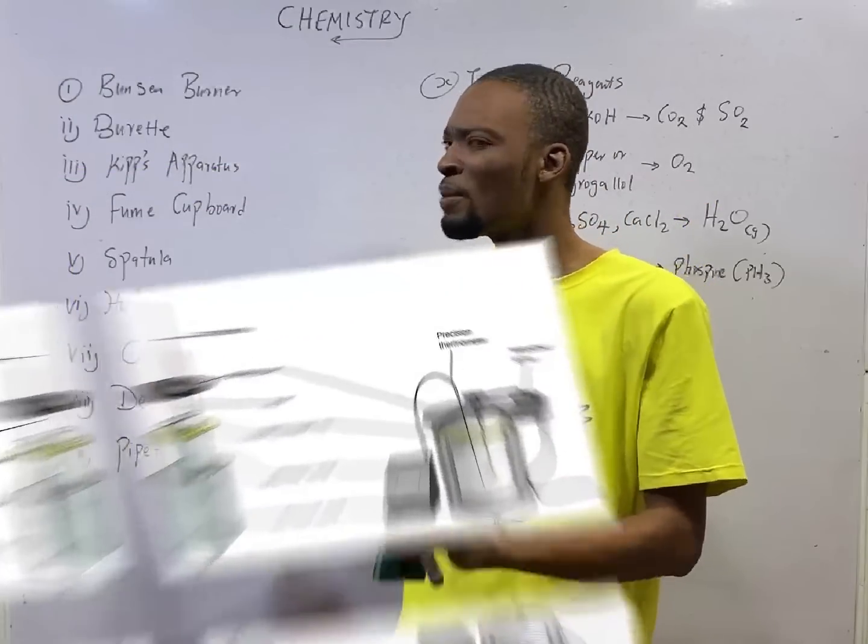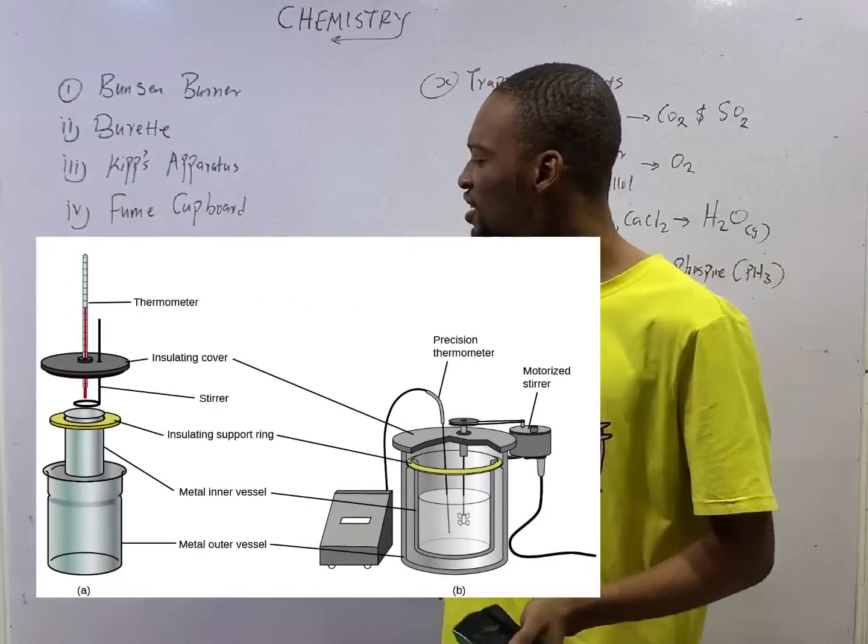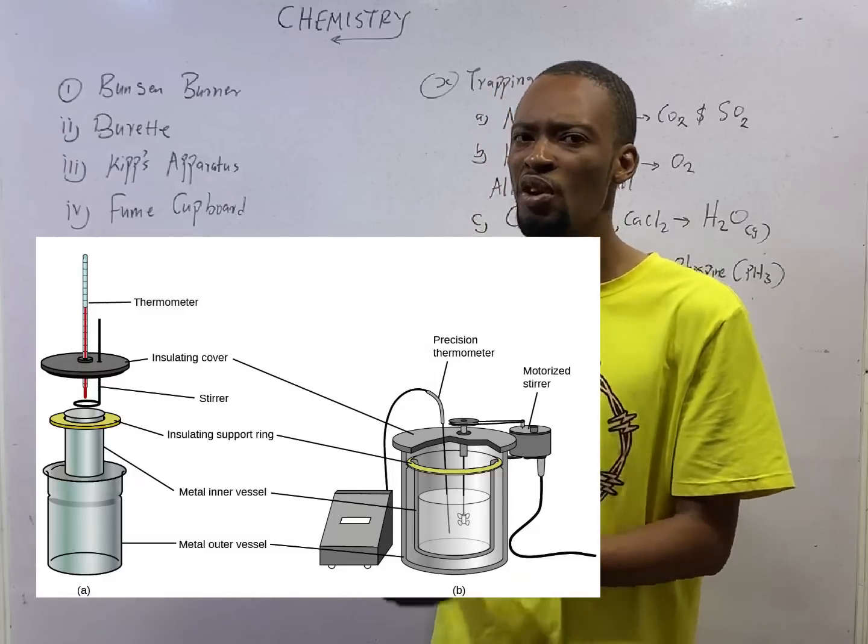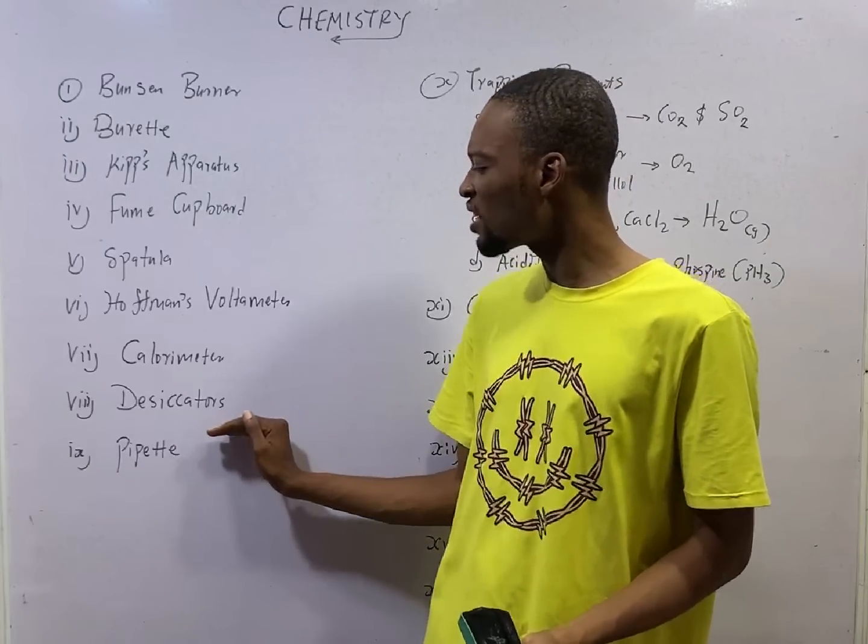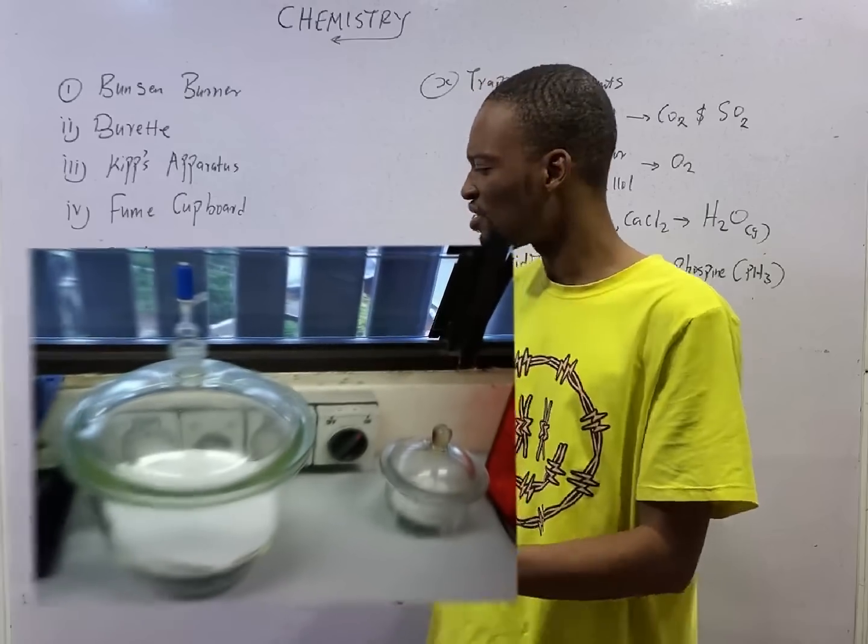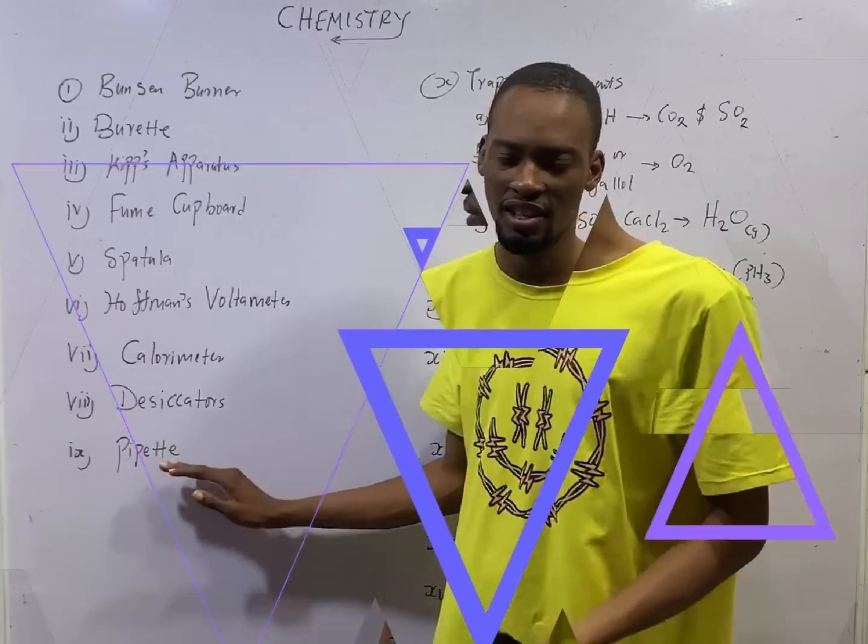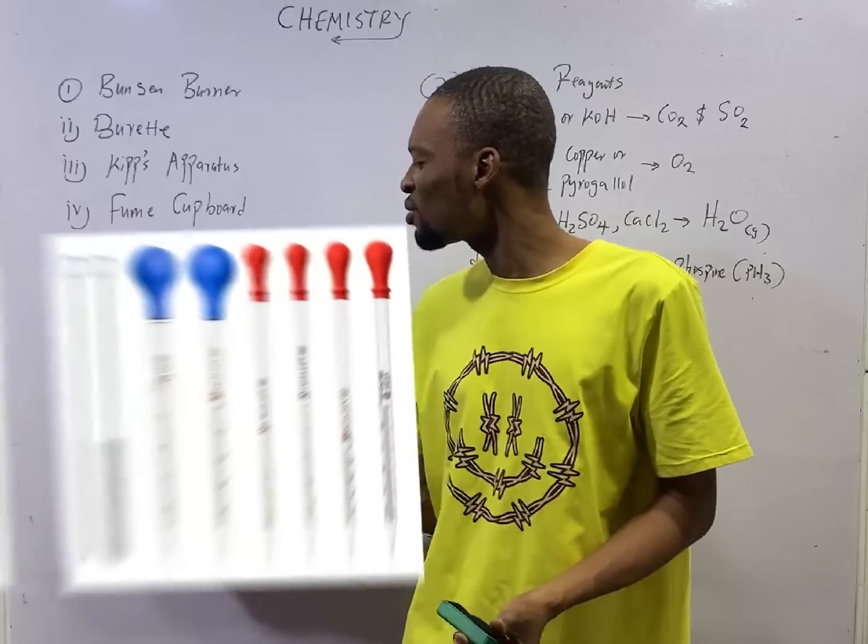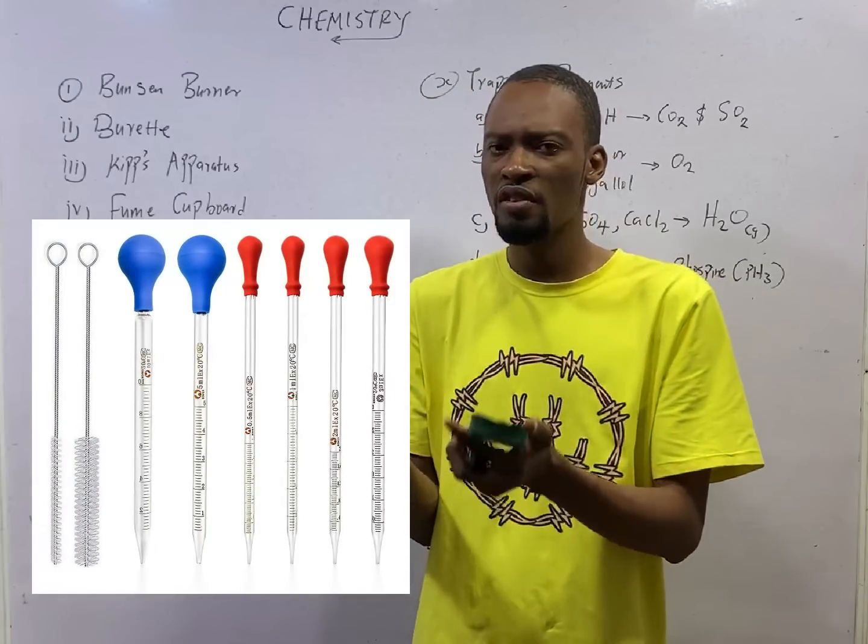Calorimeters are used for measuring enthalpy change, that is, heat change of chemical reactions, while desiccators are used for drying various substances.